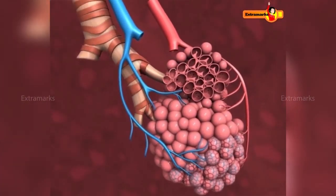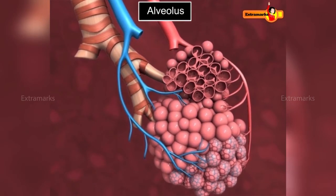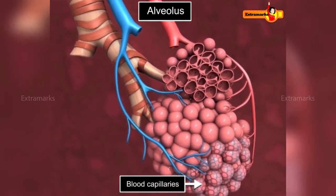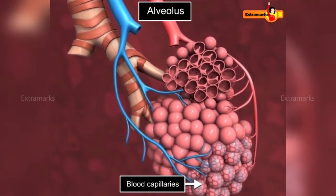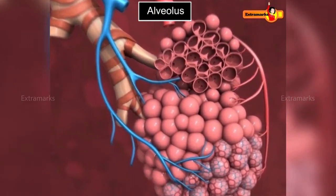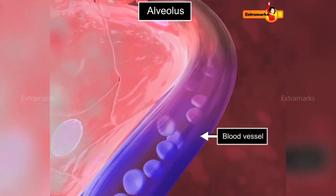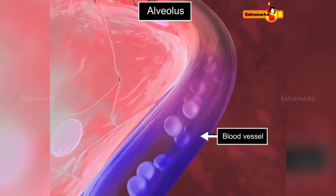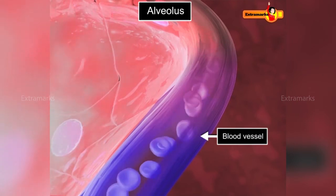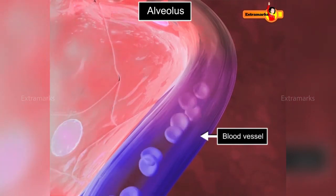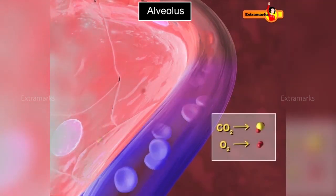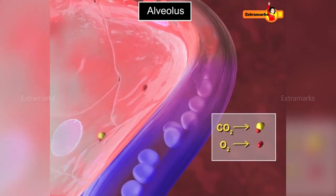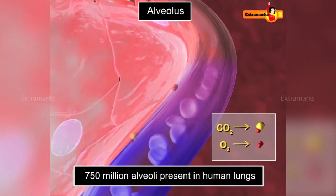Alveoli are extremely thin-walled, lobulated structures surrounded by blood capillaries, made up of thin non-ciliated simple squamous epithelium. The lumen of each alveolus has an enormous surface area that facilitates gaseous exchange during respiration. There are about 750 million alveoli present in our lungs.